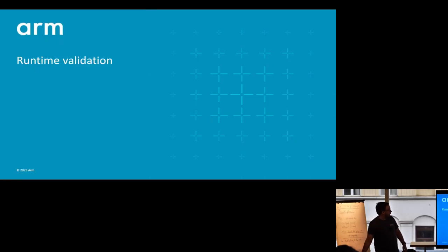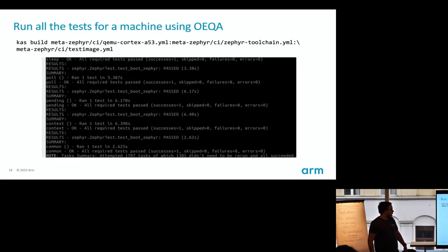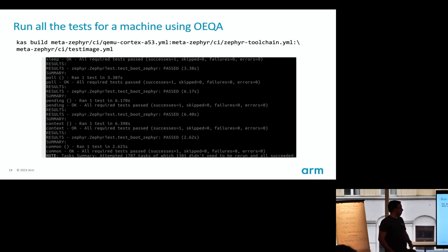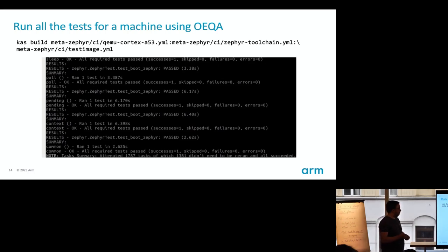Runtime validation follows nicely from the previous talk. You can use CAS, appending an additional CAS file to run a bunch of Z-test test cases from upstream Zephyr and automatically validate that they pass. This is similar to what Twister does in Zephyr itself — building many images and testing output automatically with a single command.